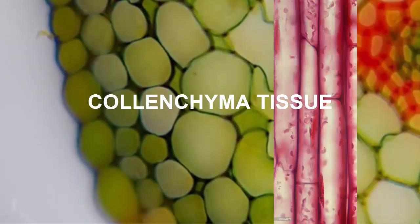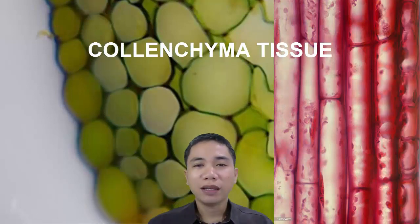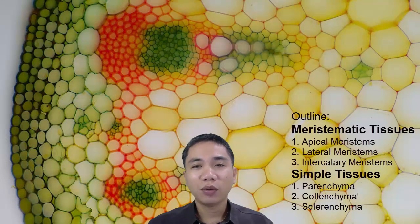Colenchyma cells are typically longer than they are wide, and their walls are pliable as well as strong, providing flexible support for both growing and mature organs such as leaves and floral parts. You can bend a plant to a degree that it will not break, and when you release it, it goes back to its original position. These plastic and elastic properties can be greatly attributed to colenchyma tissue, as parenchyma are quite weak while sclerenchyma are too hard to provide flexibility.